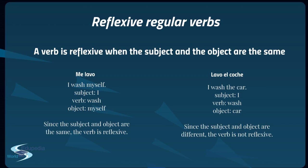For example, in the sentence 'me lavo' — I wash myself — lavo comes from the verb lavarse. The subject is I, yo, which is not in the Spanish sentence, but we know the subject is yo. The verb is wash, lavo from lavarse, and the object is myself — me — that reflexive pronoun is the object. Since the subject and the object are the same, the verb is reflexive; me lavo is a reflexive sentence.